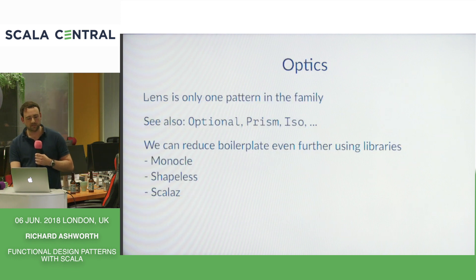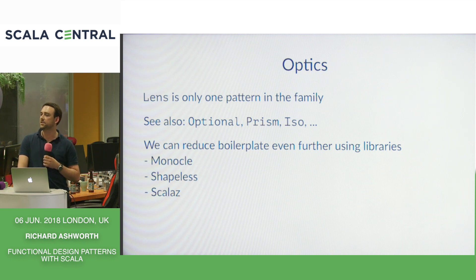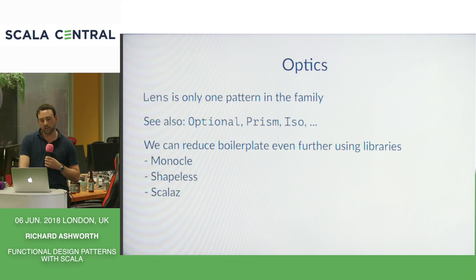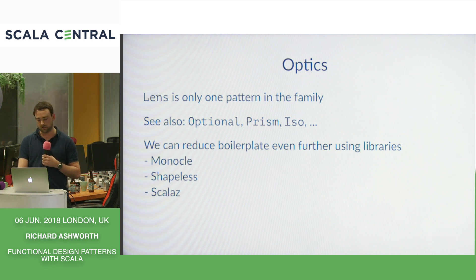Lenses belong to a much wider family of patterns called optics. This includes things like Optional, which is very similar to the Option type — so if we have a nested object hierarchy where not everything is defined, we can use Optional to safely update state at lower levels in that structure. The boilerplate can be reduced even further. I've used a library called Monocle. Lenses are also supported in Shapeless and Scalaz. I certainly recommend checking these out if you're going to use them in your code.